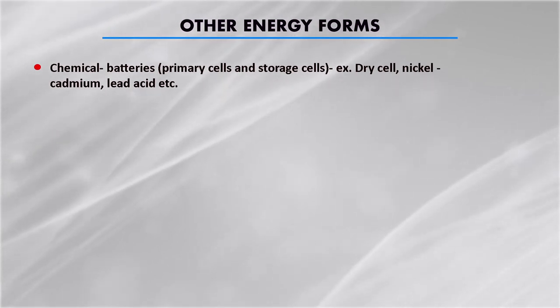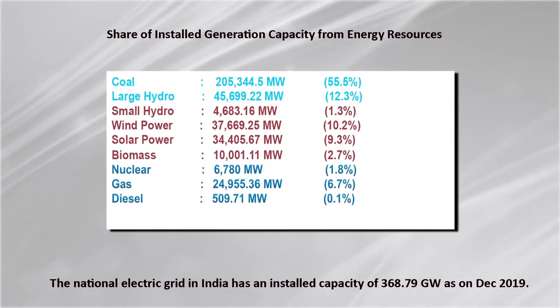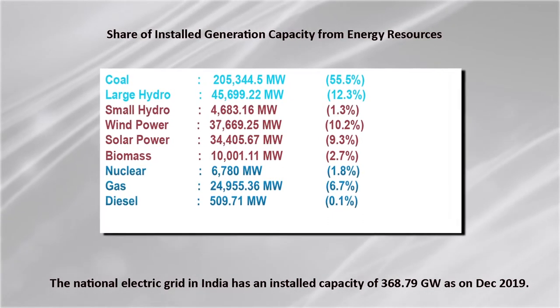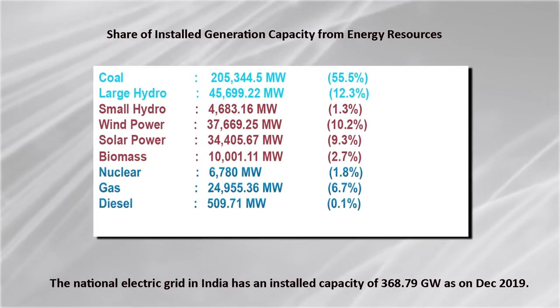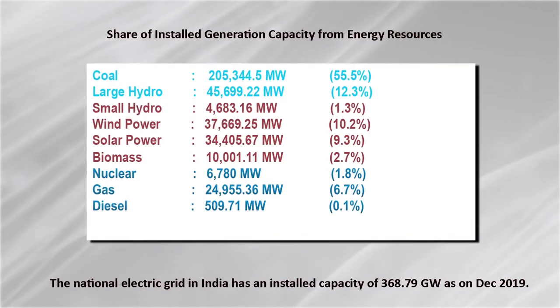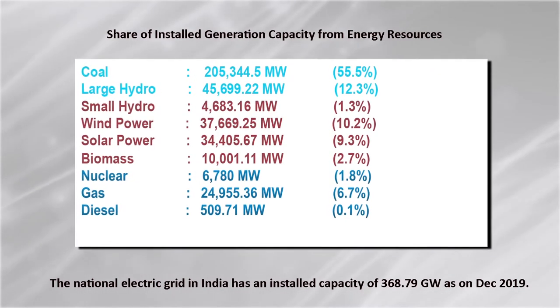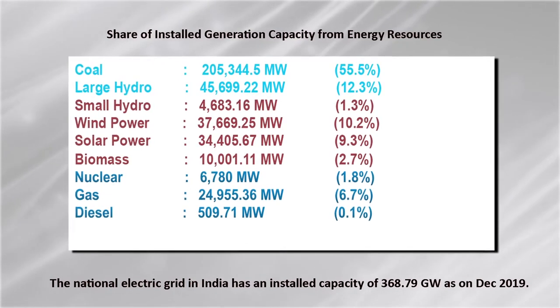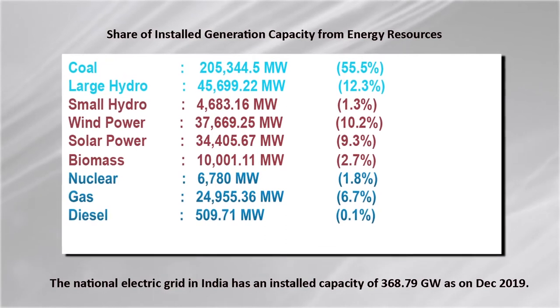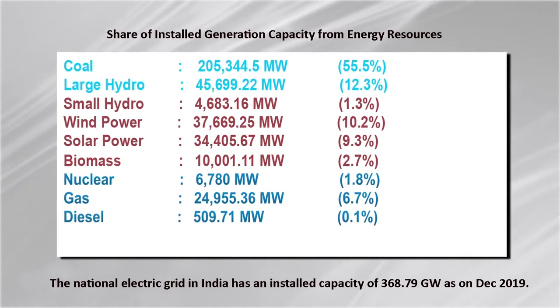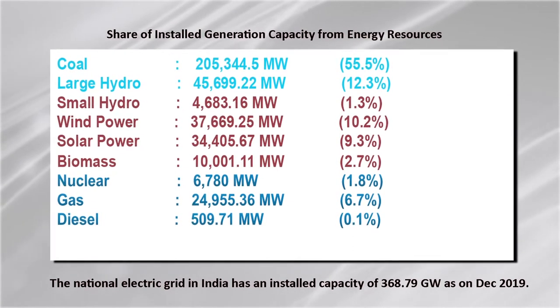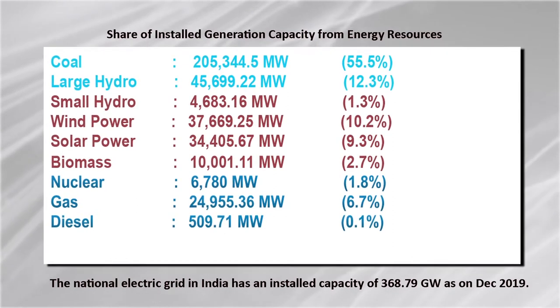The national electric grid in India had an installed capacity of almost 370 gigawatts as of December 2019. The share of installed generation capacity from various energy sources is: coal 55.5%, large hydro 12.3%, small hydro 1.3%, wind power 10.2%, solar power 9.3%, biomass 2.7%, nuclear 1.8%, gas 6.7%, and diesel 0.1%. These are the contributions of the various energy sources to power generation in India.